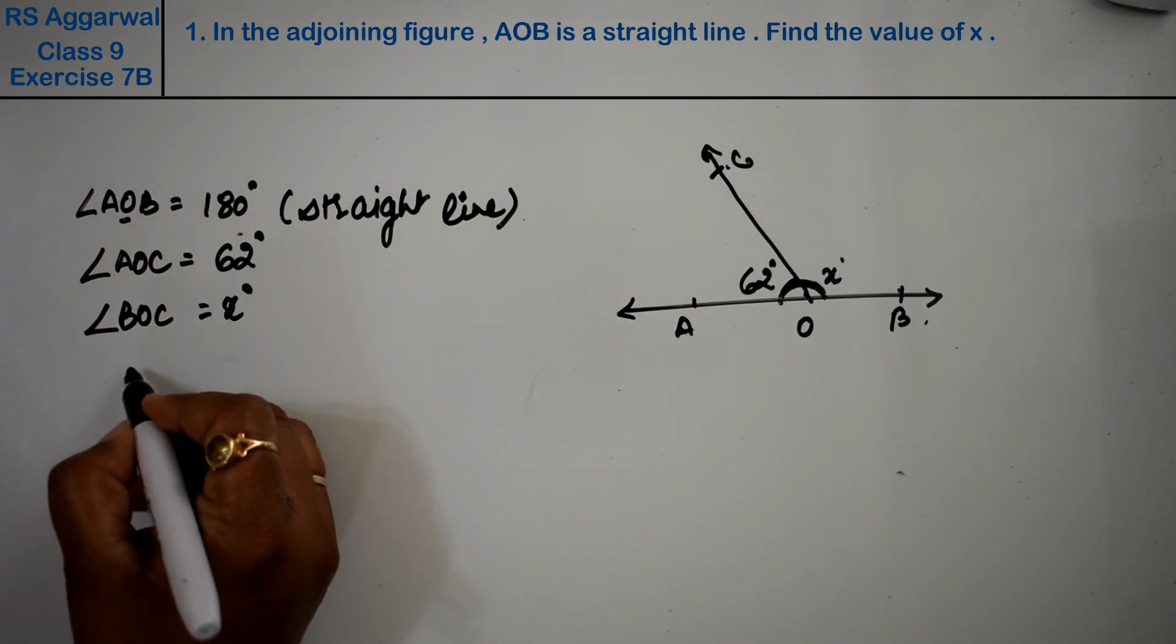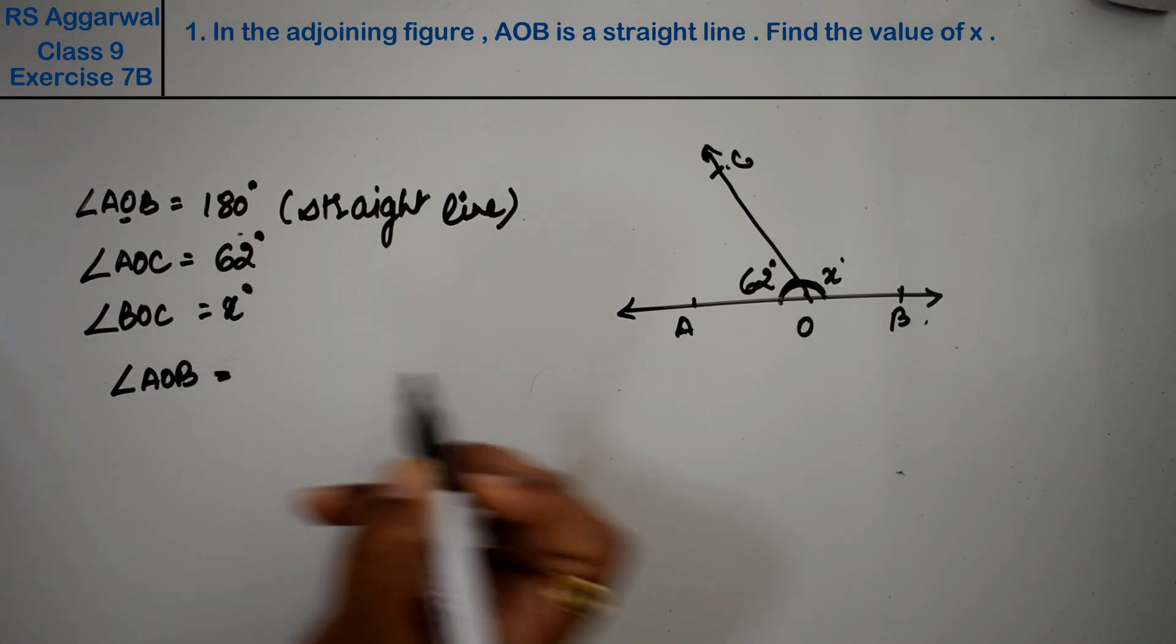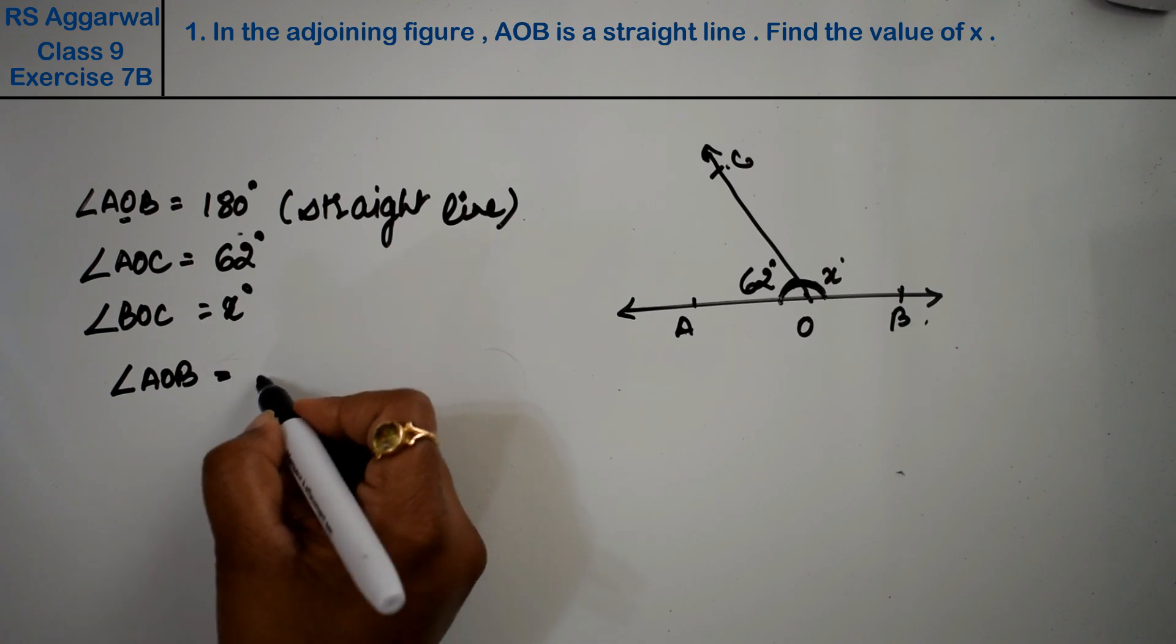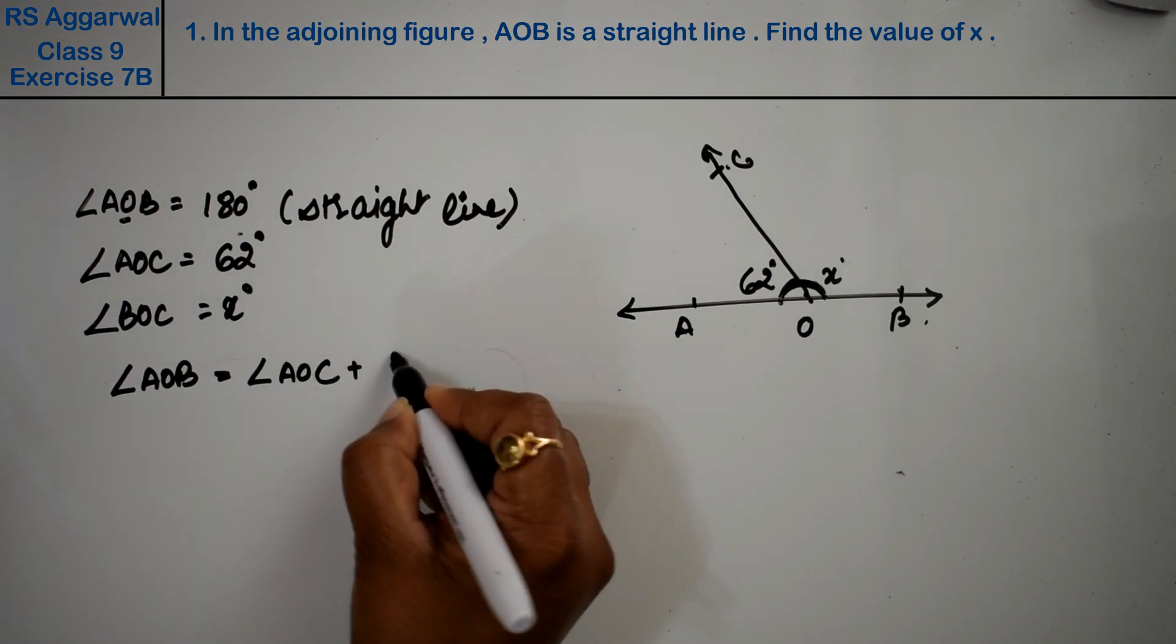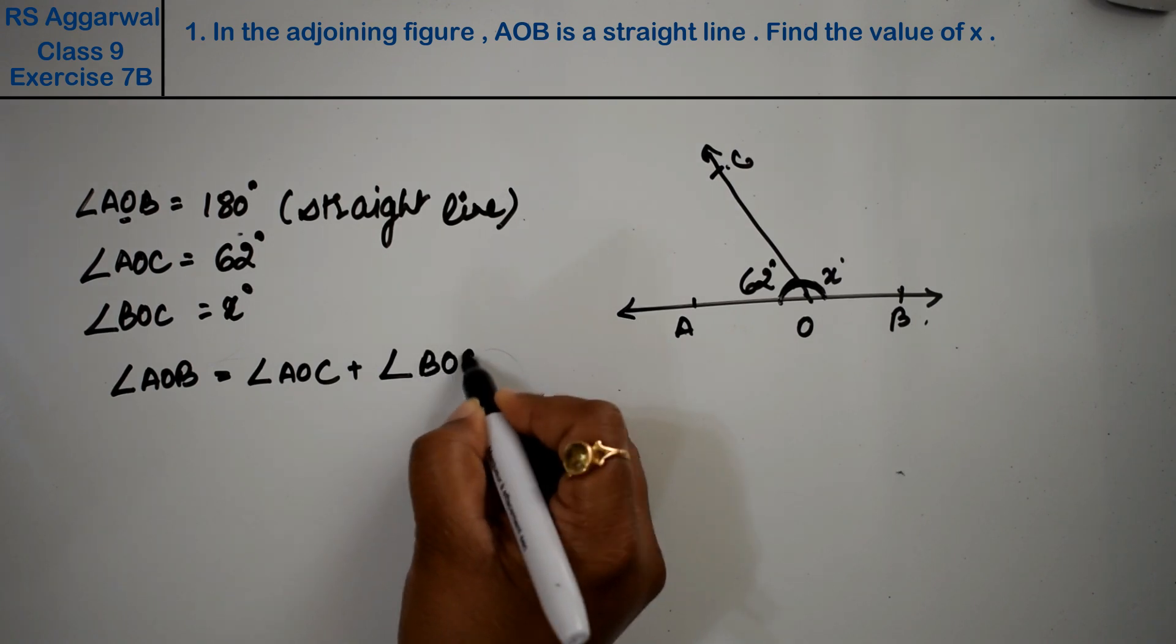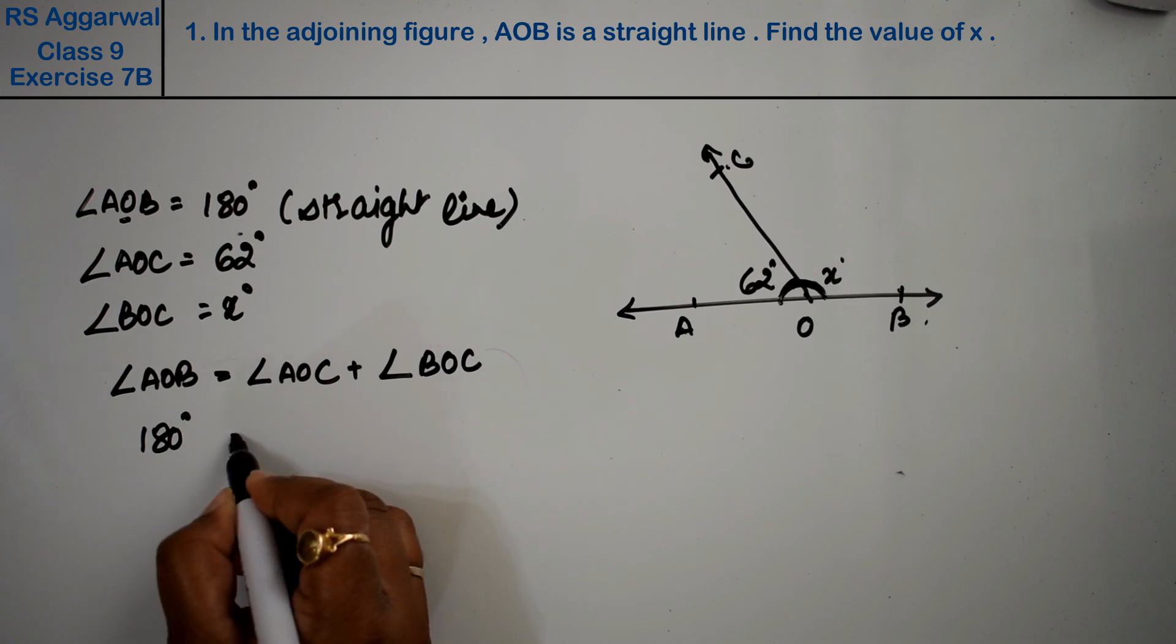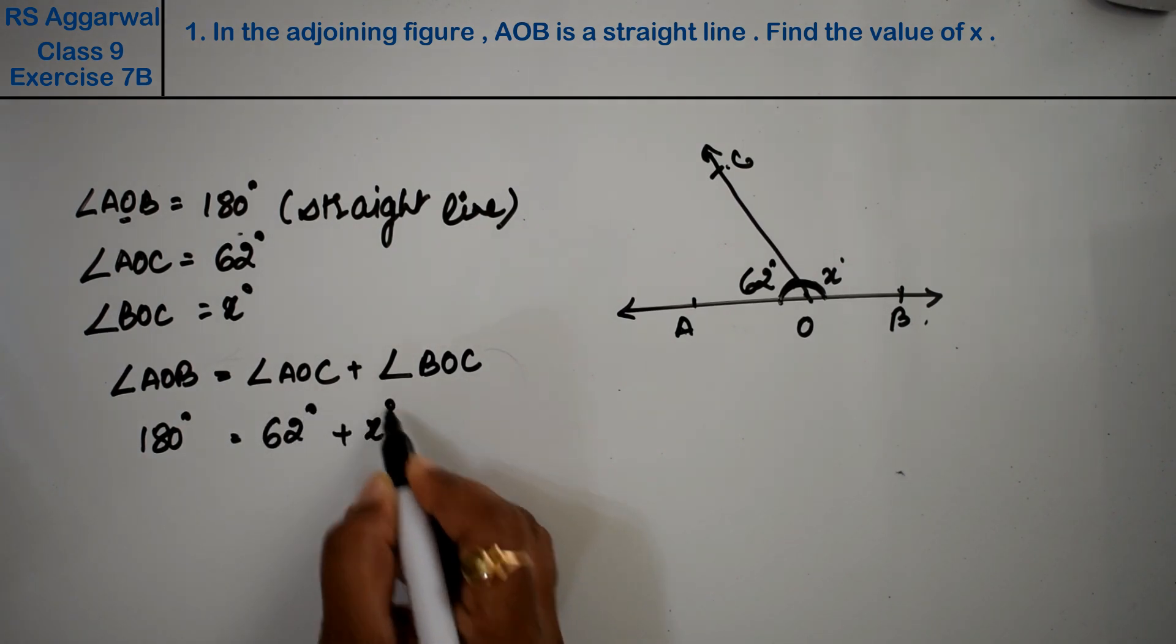Right? Friends, AOB will become a straight line angle when we add this angle plus this angle together, that is angle AOC plus angle BOC. Right friends, this is given as 180 degrees. AOC is given as 62 degrees and this is given as x degrees.